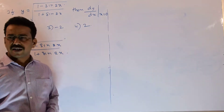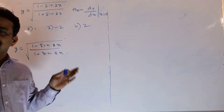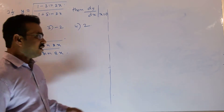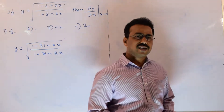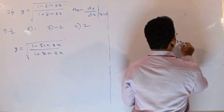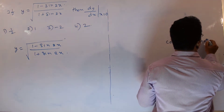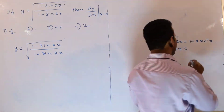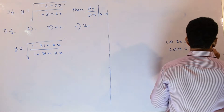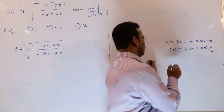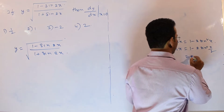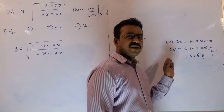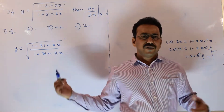In the first step we will try to eliminate the 1, and in the second step we have to eliminate the square root. So it would be better to convert into terms of cos. There are two formulas: cos 2x equals 1 minus 2 sin²x, so cos x equals 1 minus 2 sin²(x/2). Similarly, you can also write 2 cos²(x/2) minus 1. As per our convenience, we can adopt either formula.